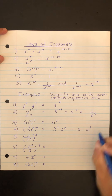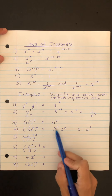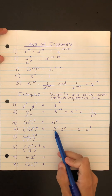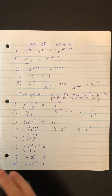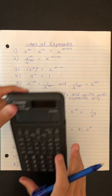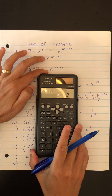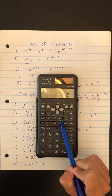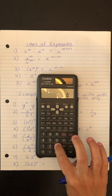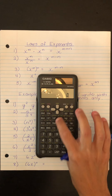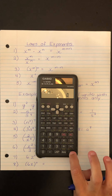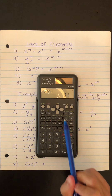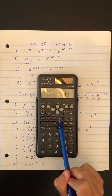If you ever have trouble evaluating these, you can use your calculator. On this Casio calculator, you would use the exponent button like this: 3 to the power of 4 equals 81. So use that button for evaluating powers.